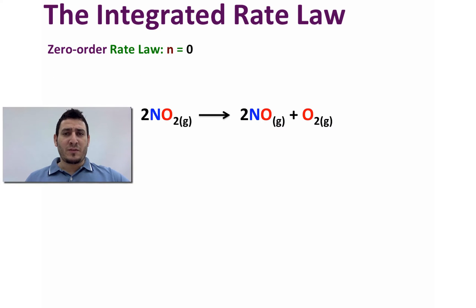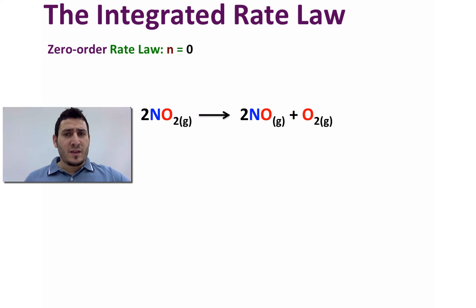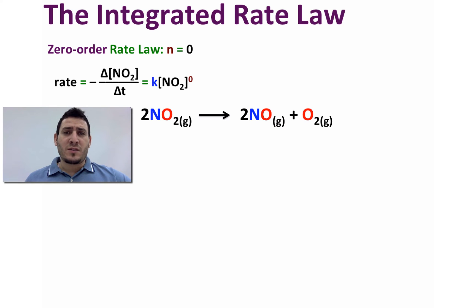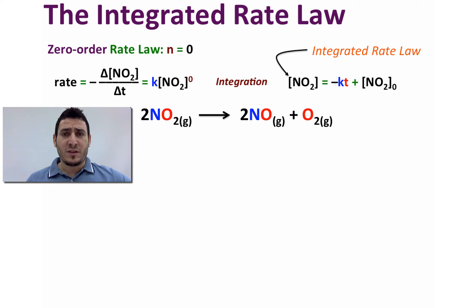Consider the decomposition reaction of nitrogen dioxide into nitrogen monoxide and oxygen. Assume that the reaction is zero order in concentration of NO₂. In this case the differential rate law will be written as: rate = k × [NO₂]⁰. The integration of this rate law gives us: [NO₂] = −kt + [NO₂]₀, where [NO₂]₀ is the initial concentration. This is called the integrated rate law.